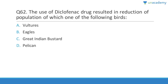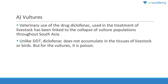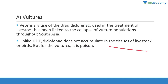Question sixty-two: The use of the drug diclofenac resulted in a reduction in the population of which bird? Diclofenac (brand name Voveran) is used as a painkiller. Vultures cannot process it — their kidneys fail. Answer is A, vultures. Use of diclofenac in the treatment of livestock has been linked to the collapse of vulture populations throughout South Asia. Unlike DDT, diclofenac does not accumulate in the tissues of livestock or birds, but for vultures it is a poison.